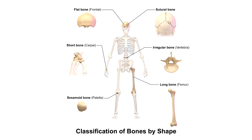Flat bones are quite thin and they are broad in shape. You can find these bones where we need to have protection of the underlying organs or where we need that broad kind of shape for muscular attachment. Examples include the sternum for protection, the ribs also for protection, and the scapula which is where we have attachment of muscles for the shoulder blades.